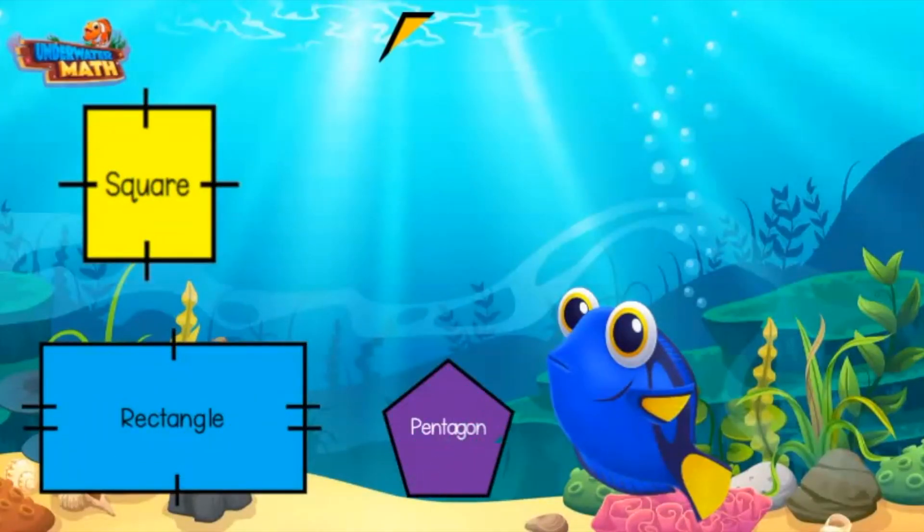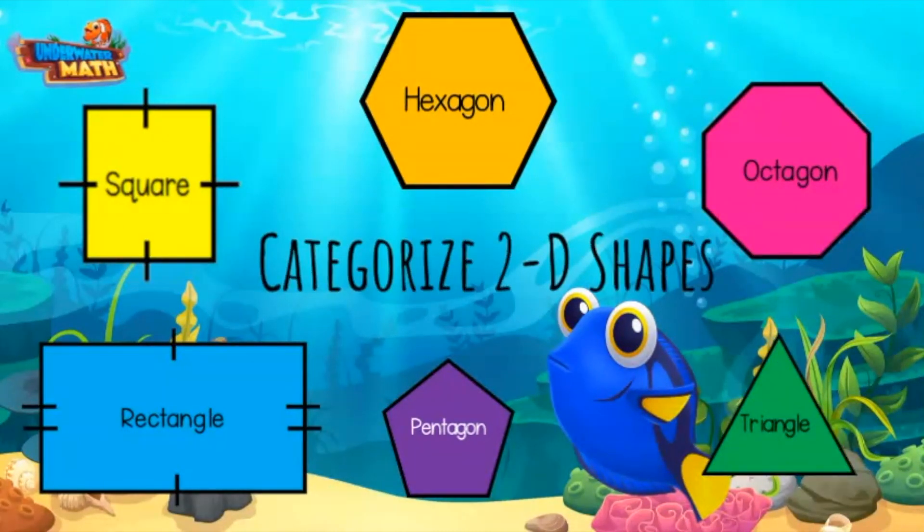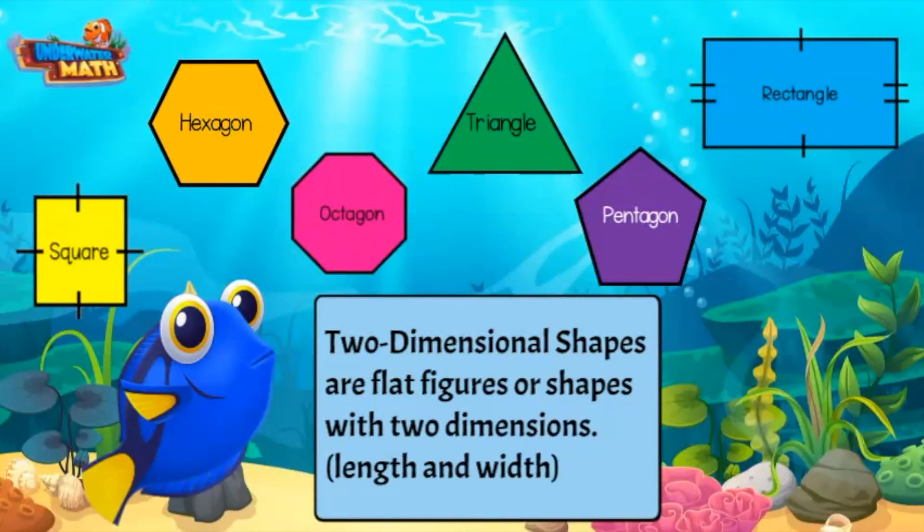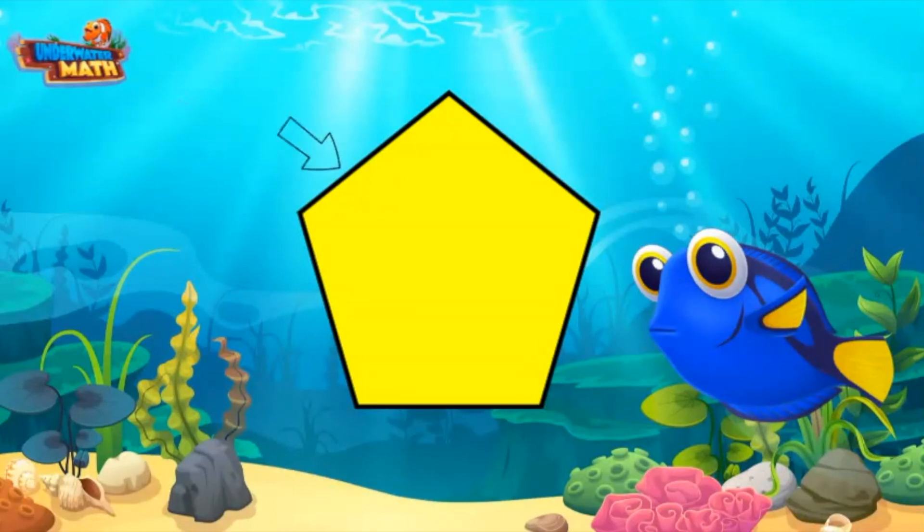Hey, Celeste here to talk about categorizing 2D shapes. Two-dimensional shapes are flat figures with two dimensions: length and width. Two-dimensional shapes are identified by their sides or edges. This pentagon has five sides.